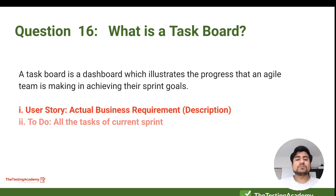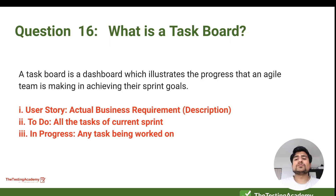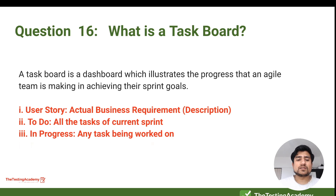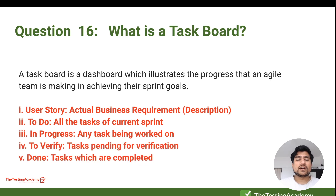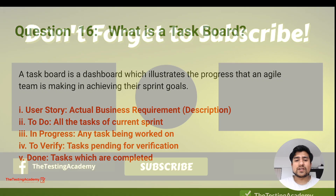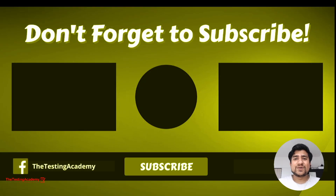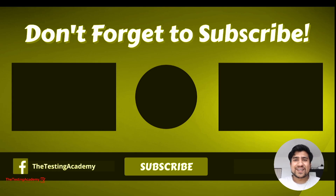Similarly, the task board is a dashboard that shows the progress of your agile team. It typically has columns like user stories, to-do, in-progress, to-verify, and done. That's all about this video — I hope you've understood lots of agile testing questions and answers. Don't forget to subscribe, and if you have any questions, let me know in the comments. This is your host Pramod — have a nice day, bye!